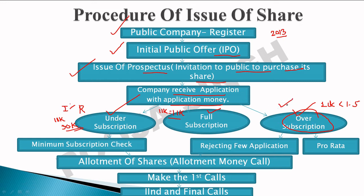In over-subscription, a separate video has been made — you must watch it. When there is under-subscription, the company checks the minimum subscription guideline. If the minimum subscription is not met, the IPO is cancelled; if it is met, the IPO is successful.